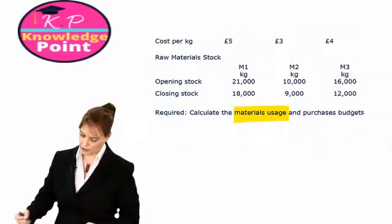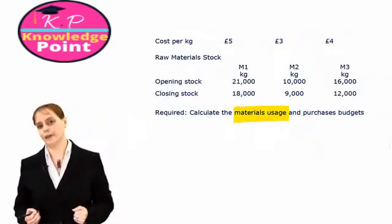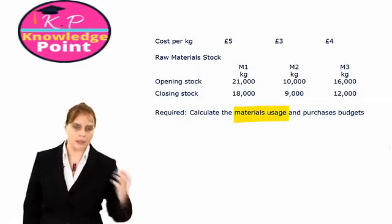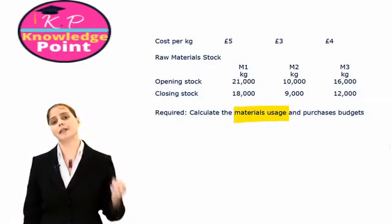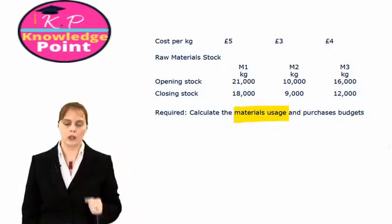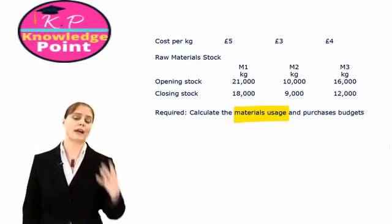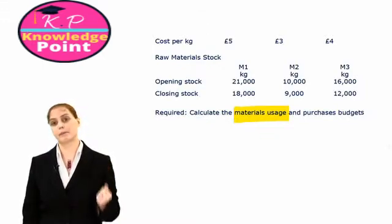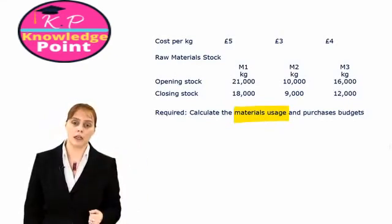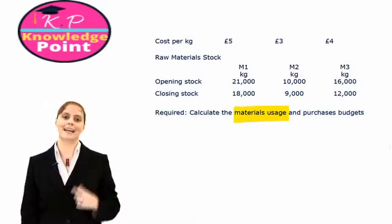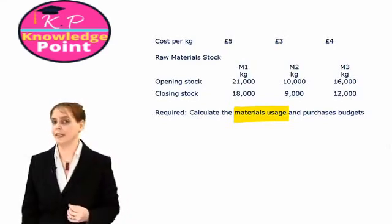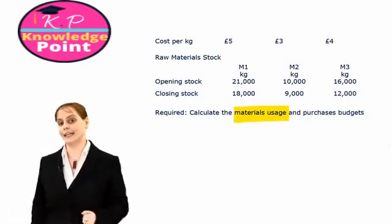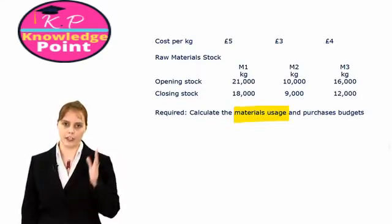We're told in the question what our opening and closing stock of each material needs to be. Opening stock is the material available to us at the start of the year — if we already have kilograms available for use, we don't need to buy them, so we subtract opening stock from our purchases budget. Closing stock is the stock we want left over at the end of the year, so we will have to buy that during the year and add it to our purchases budget.